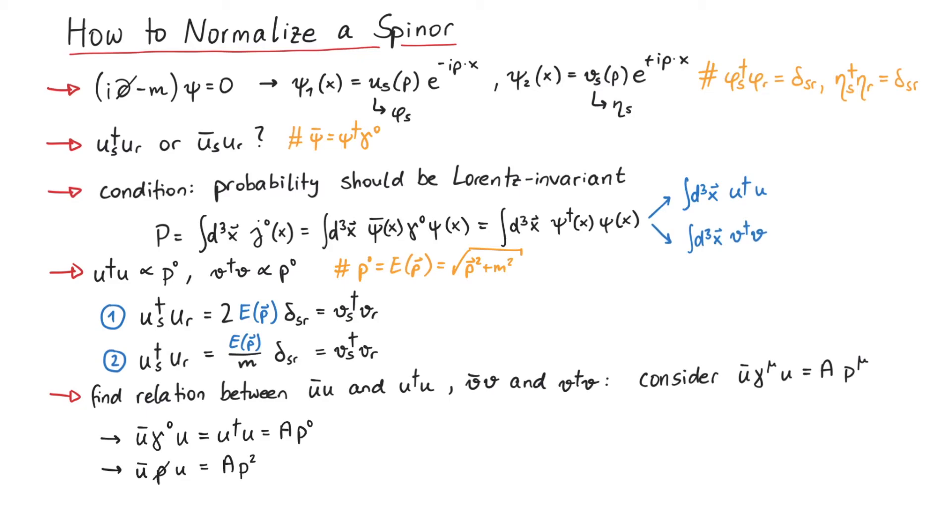Using the Dirac equation, we can replace p slash u with m times u, and can now eliminate a from these two equations. The result is that u bar u is given by mass divided by energy times u dagger u.